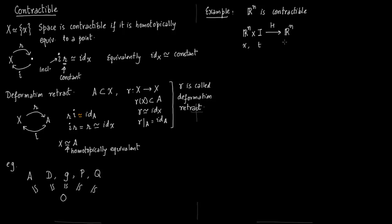So (X,t) will get mapped to tX via homotopy H. When t is 0, you just get the 0 map. So the 0 map is nothing but a constant map. And when t is 1, you just get the identity map. So you have the identity map is homotopic to a constant map, and therefore we have a homotopic equivalence between R^n and a point.